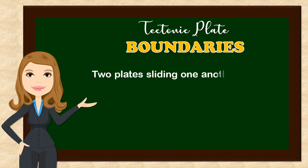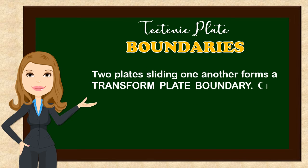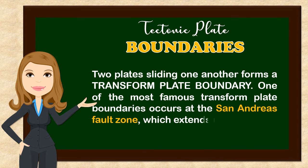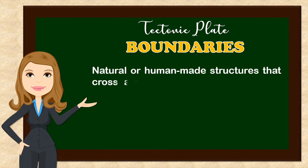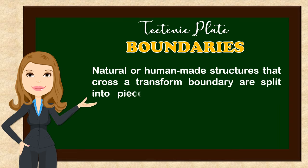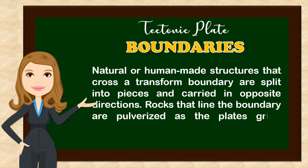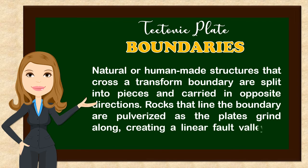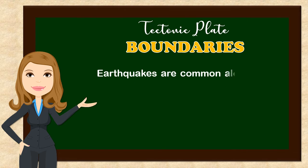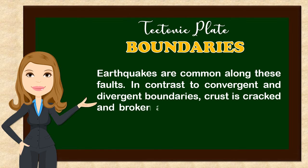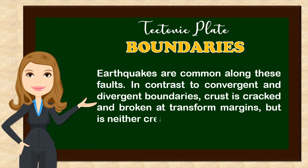Two plates sliding past one another forms a transform plate boundary. One of the most famous transform plate boundaries occurs at the San Andreas Fault Zone, which extends underwater. Natural or human-made structures that cross a transform boundary are split into pieces and carried in opposite directions. Rocks that line the boundary are pulverized as the plates grind along, creating a linear fault valley or undersea canyon. Earthquakes are common along these faults. In contrast to convergent and divergent boundaries, crust is cracked and broken at transform margins but is neither created nor destroyed.